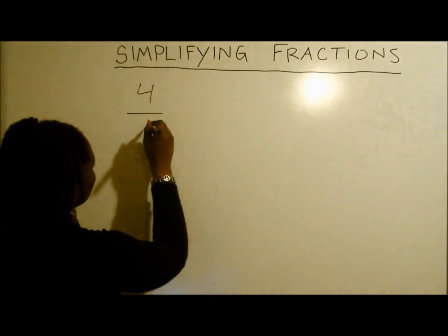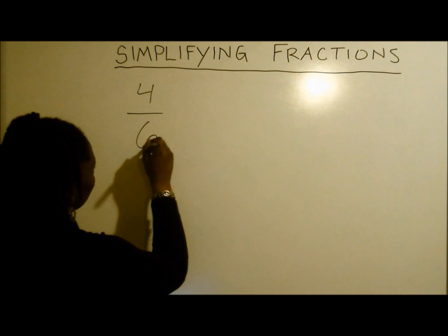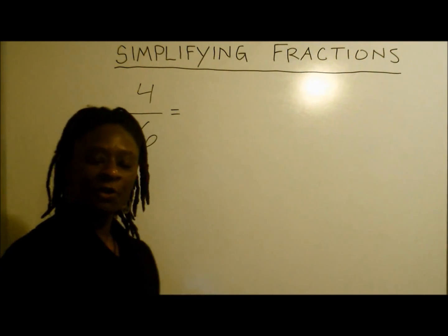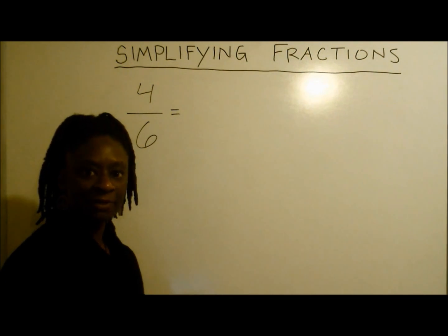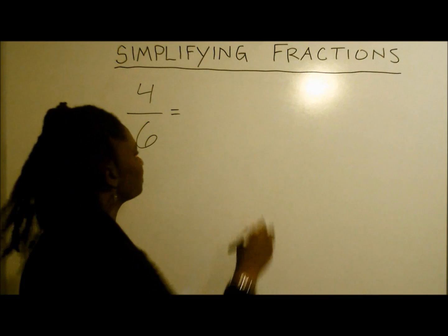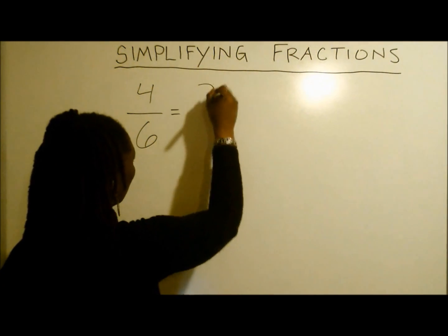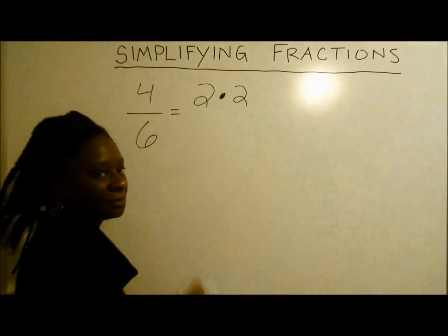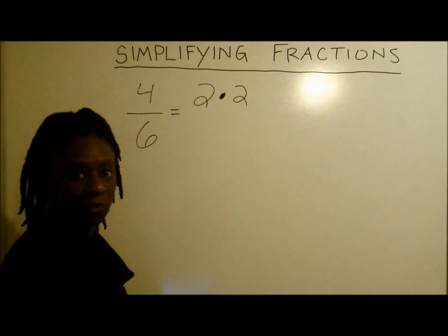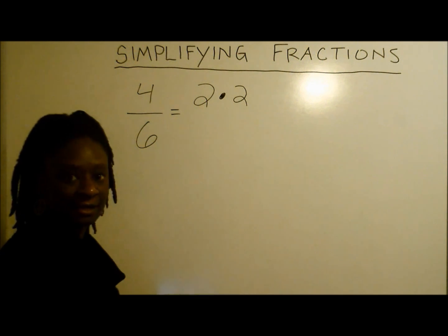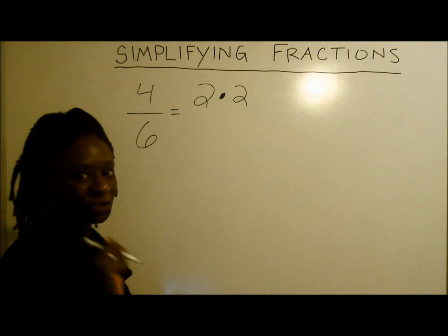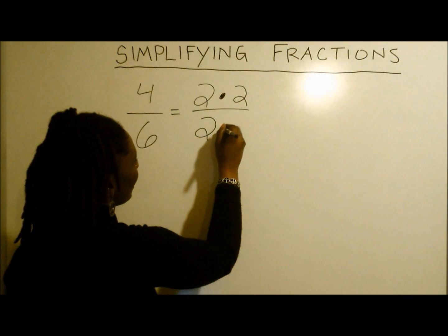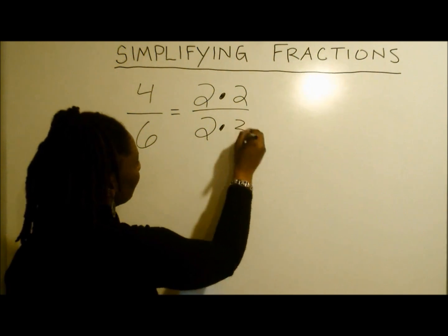We'll take 4 over 6 for example. Now our first step is to simply break these numbers down. We all know that 2 times 2 gives us 4. But what about the 6? You guessed it — 2 times 3.